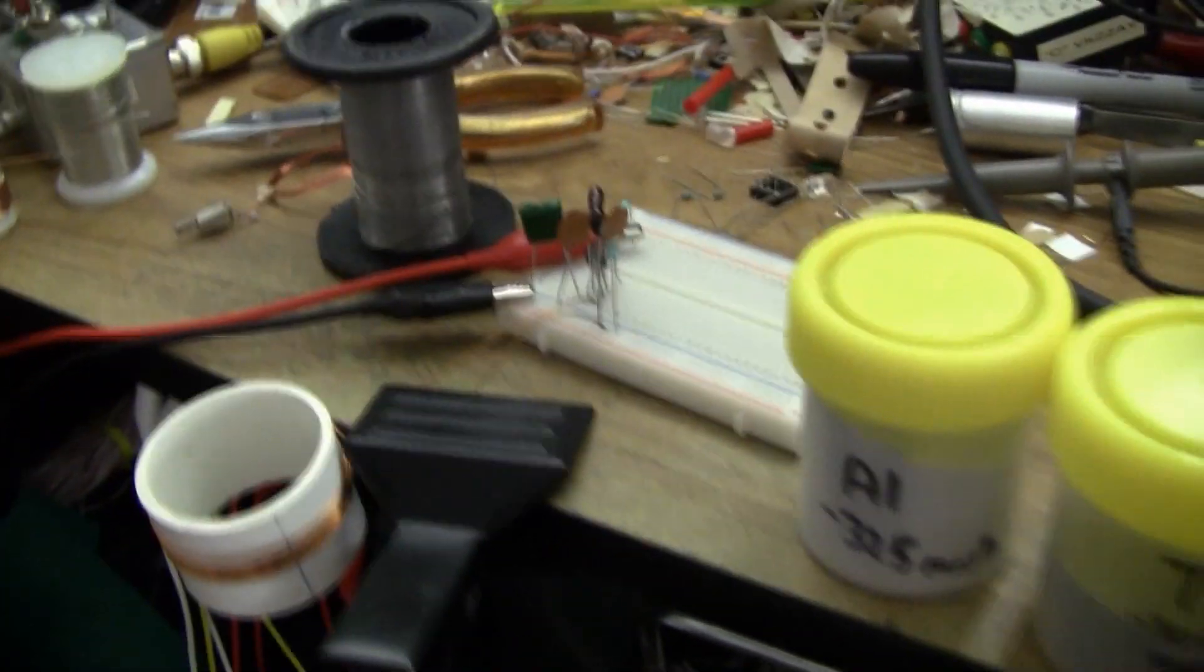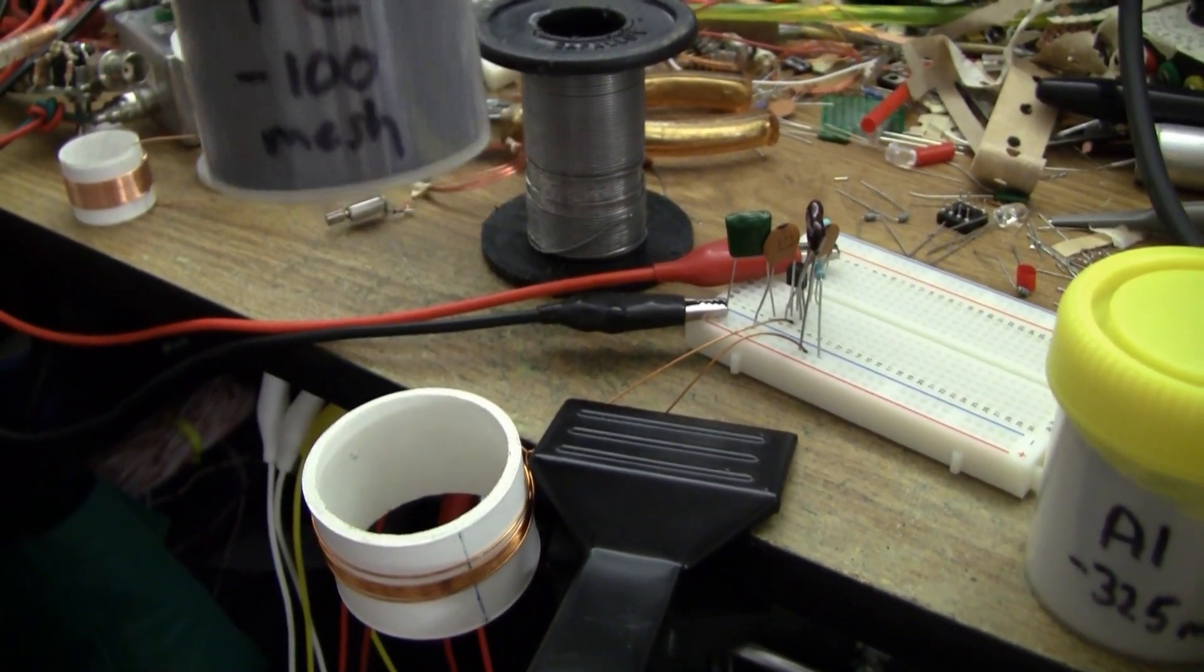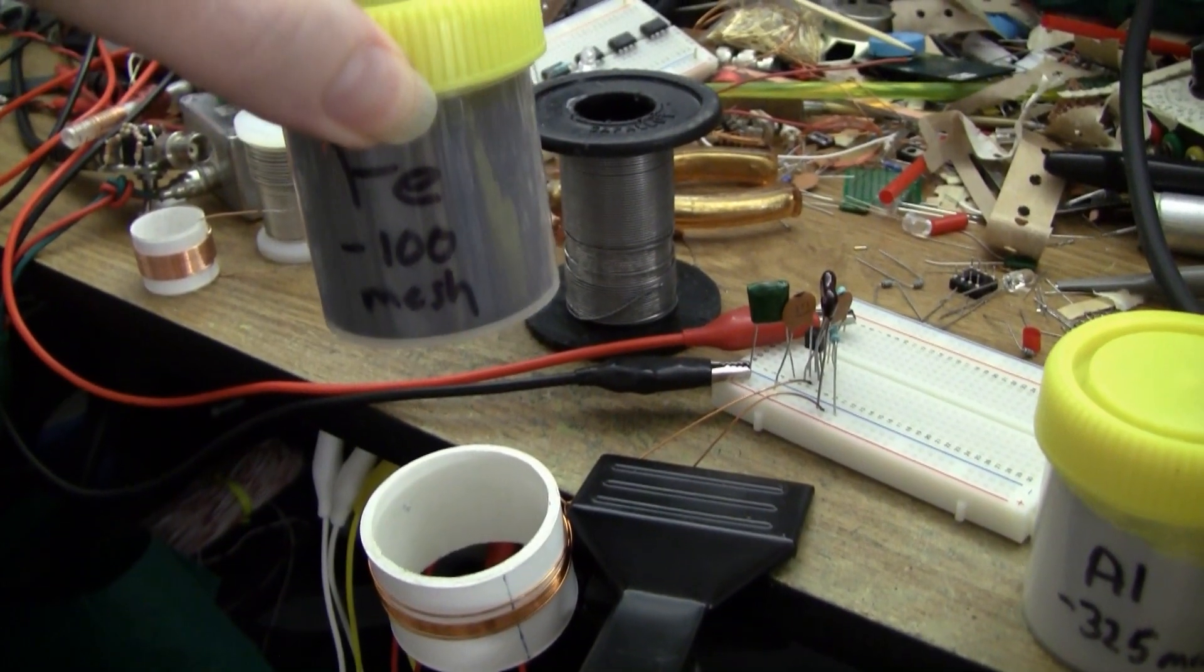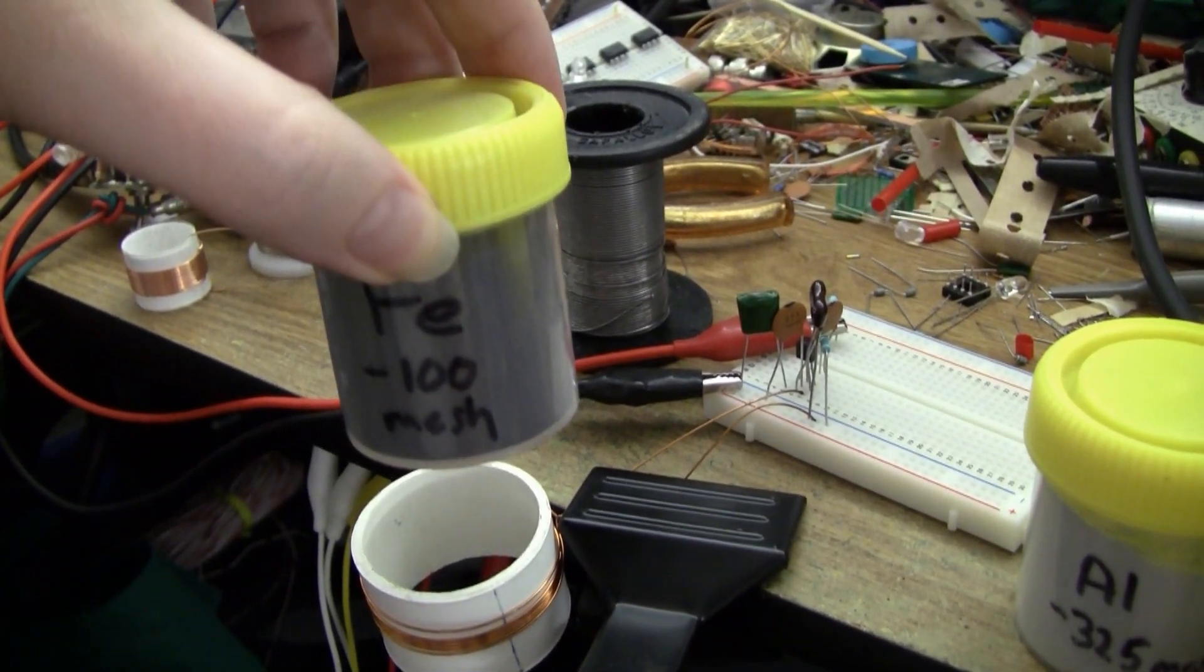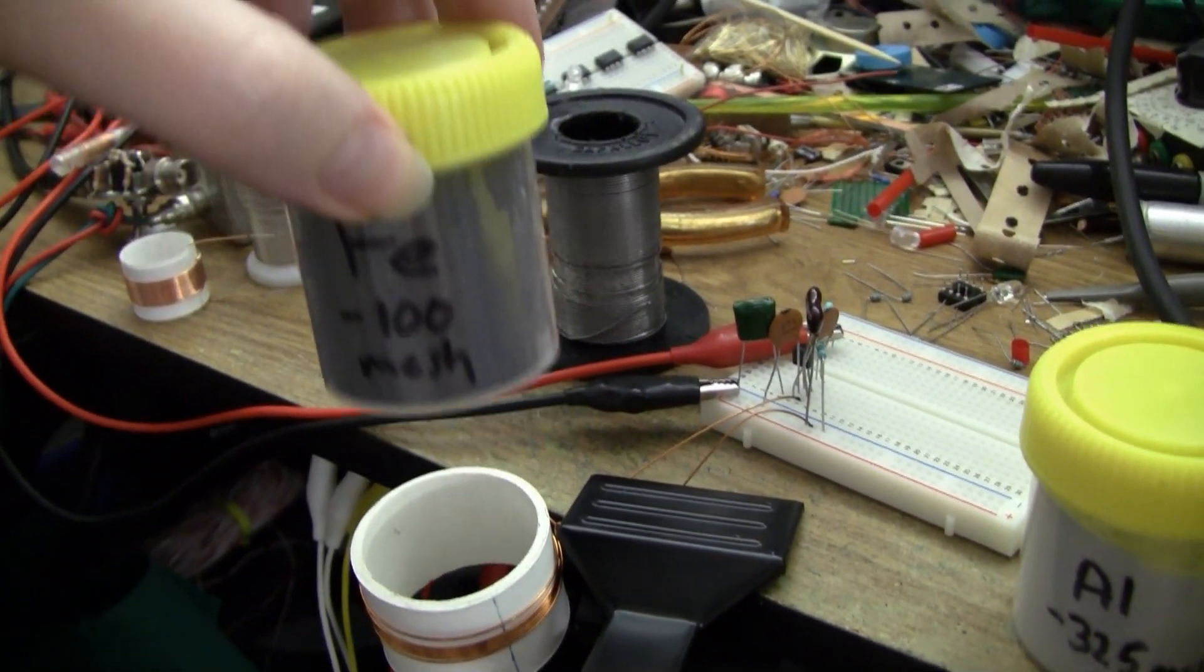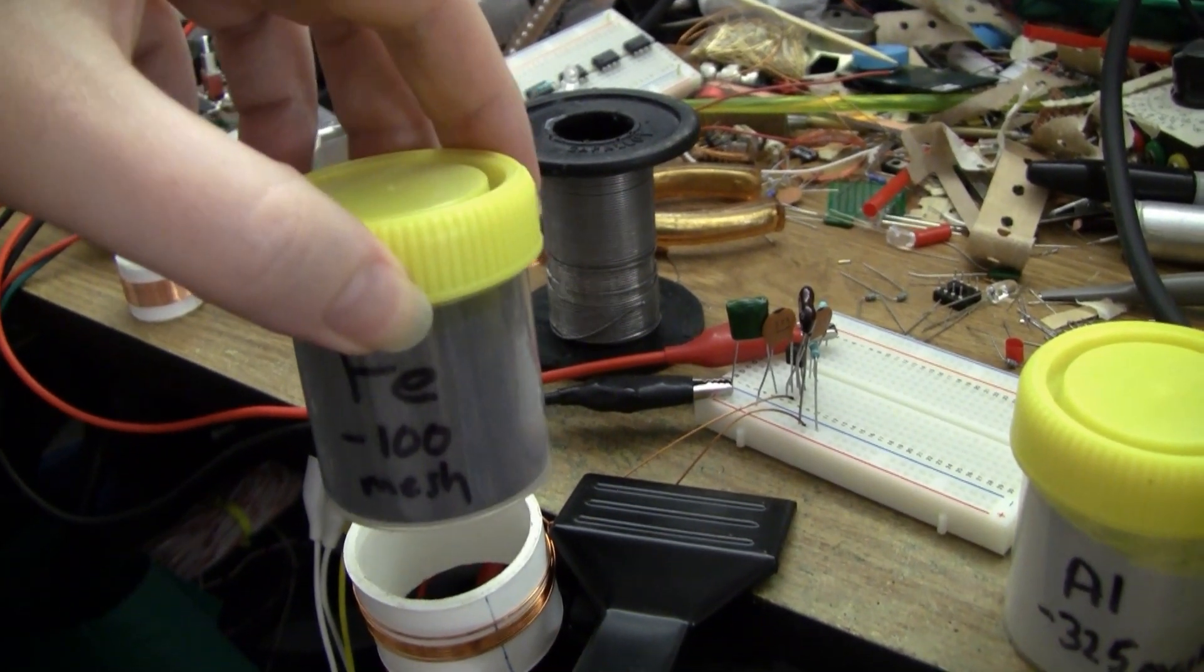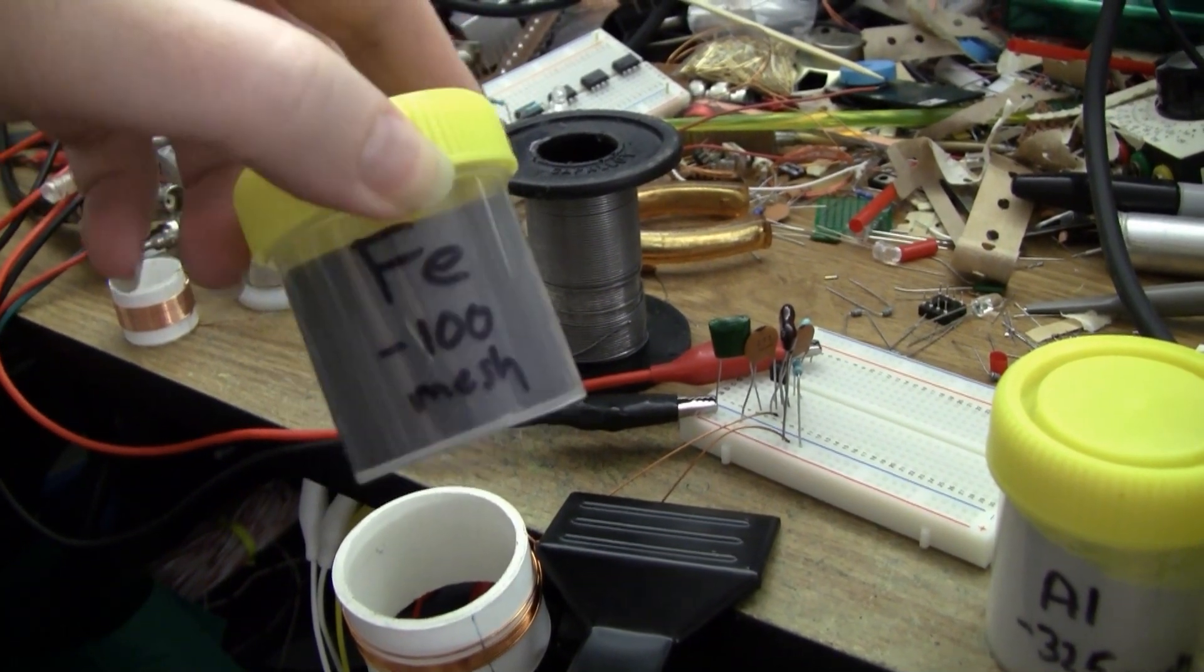All right, now iron. Powdered iron has fantastic permeability and fairly low losses because its bulk conductivity is quite low. As a matter of fact, the powdered iron toroids that you use for HF inductors that I'm going to talk about in another video are made out of this kind of stuff.